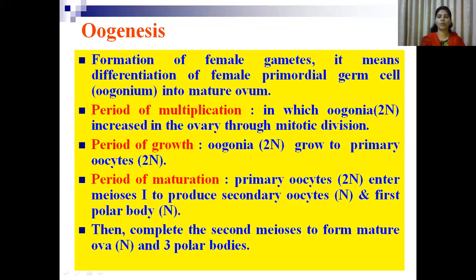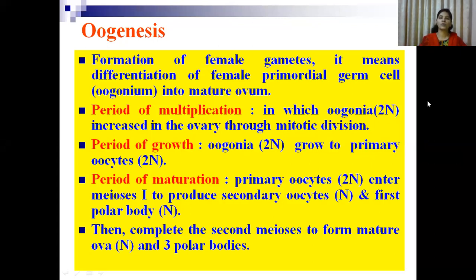So dear students, what is oogenesis? Oogenesis is nothing but the process of formation of female gametes — it means the differentiation of female primordial germ cells into a mature ovum. Just as in spermatogenesis, in oogenesis the formation of the respective gamete also starts from primordial germ cells. This process takes place in the female sex organ, that is the ovary.